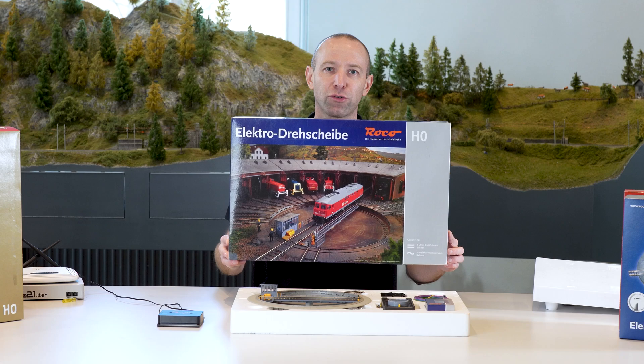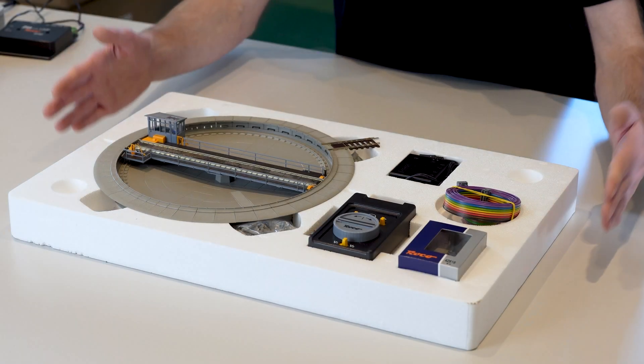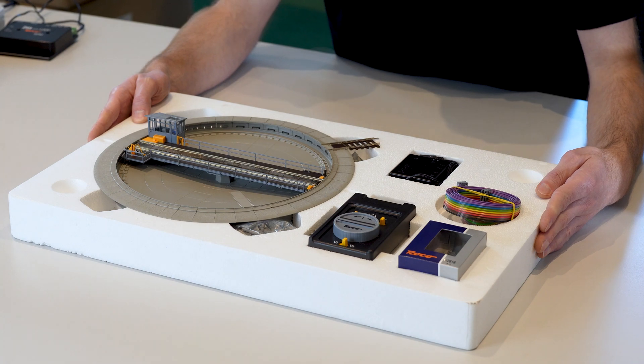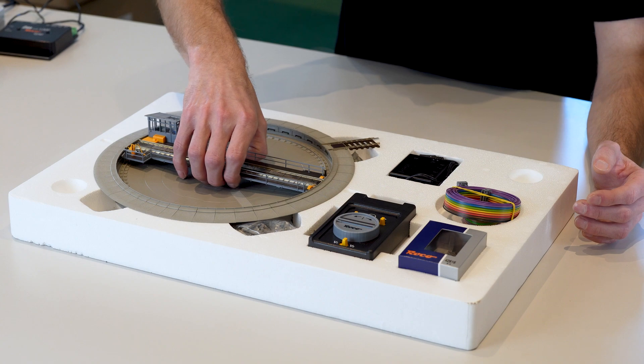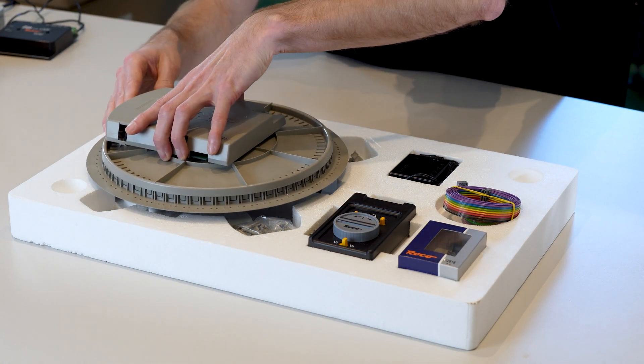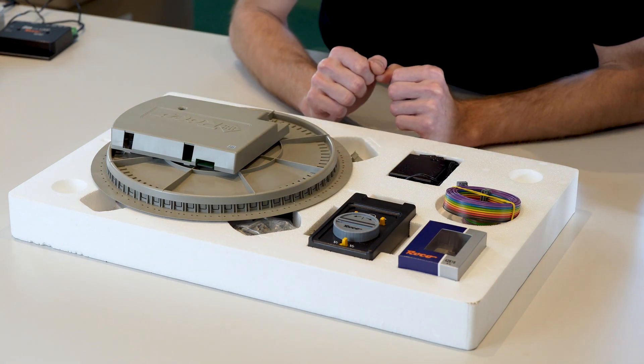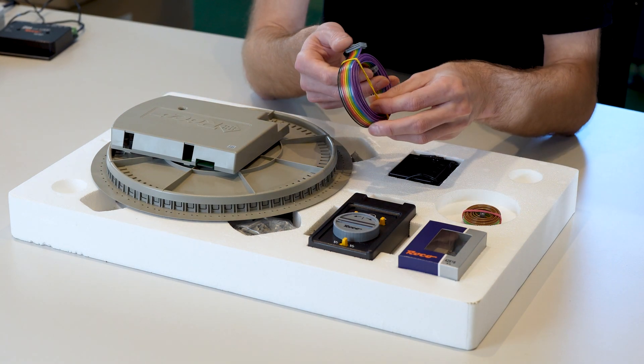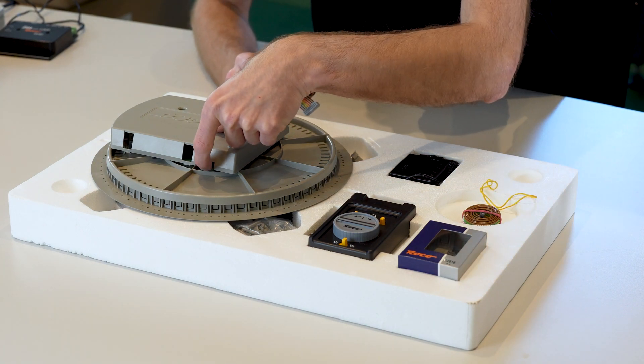Now let's look at the large Roco turntable, the 42615. With the large Roco turntable, the connection is a little different. First, we take the turntable and turn it over. You can easily put it back in the packaging without damaging the cabin. Then take the large ribbon cable and connect it to the circuit board. Simply attach the plug to the circuit board.